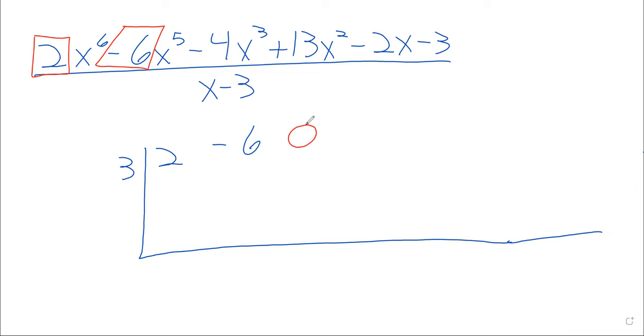But you can't skip numbers in the synthetic division, even though we don't have a fourth term written here. So it has to be 0x to the 4th, and then negative 4x cubed, 13x squared, negative 2x, negative 3. Because we're looking at these powers, and we've got a 6th power, a 5th power, 3rd, 2nd, 1st power, and you'll notice that we've skipped a number. We don't have a 4th power, so the 0 is representing the fact that we don't have a 4th power.